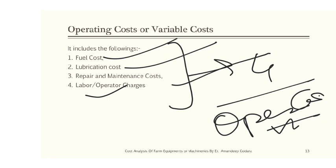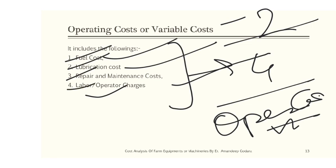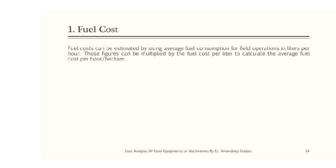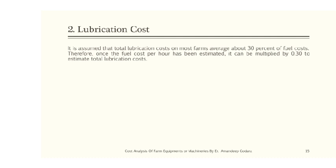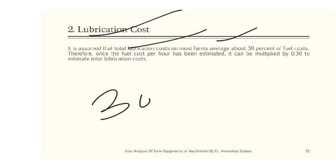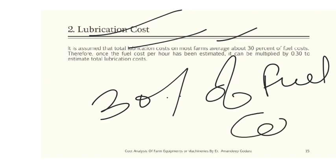Operating cost or variable cost is the second type of machinery cost. It includes: first, fuel cost; second, lubrication; third, repair and maintenance; and fourth, labor or operator charges. Fuel cost can be determined by using the average fuel consumption of the machine during field operations in liters per hour, multiplied by the fuel cost per liter to calculate the average fuel cost per hour or per hectare. Lubrication cost is assumed to average about 30 percent of the fuel costs.